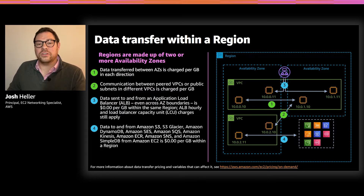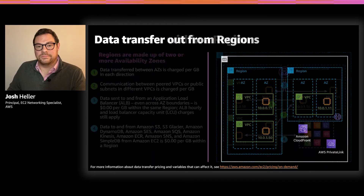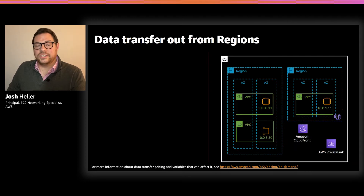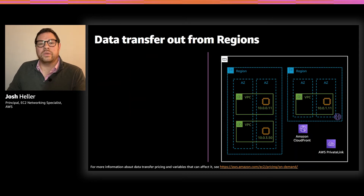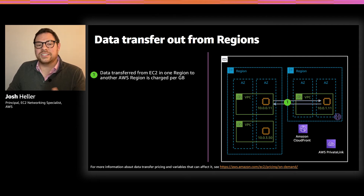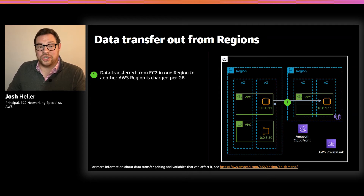Let's continue zooming out. We've looked at data transfer within a single AZ and within a single region. Now let's look at data transfer between multiple AWS regions. When an EC2 instance in one region communicates with an EC2 instance in another region, we call this inter-region data transfer, and there's a per-gigabyte charge. Importantly, we only charge for the outbound side of communication between two regions. The charge is assessed at the region where the communication initiated, and the per-gigabyte cost varies by region.